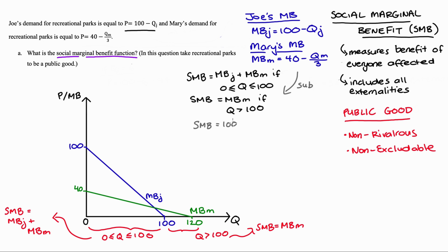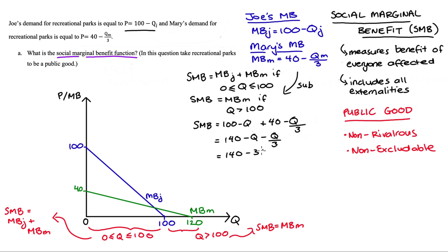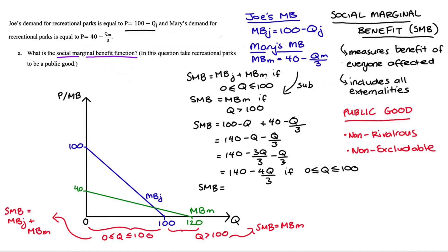Substituting in our equations, social marginal benefit equals (100 - QJ) + (40 - QM/3). Since one quantity can be enjoyed by both — it's a public good — we can remove the subscripts J and M. This gives us 140 minus Q minus Q/3. Rewriting Q as 3Q/3 allows us to combine the last two terms, giving us 140 - 4Q/3. That's our social marginal benefit function for Q between 0 and 100. For Q greater than 100, our social marginal benefit function is just 40 - Q/3, which is Mary's marginal benefit function.